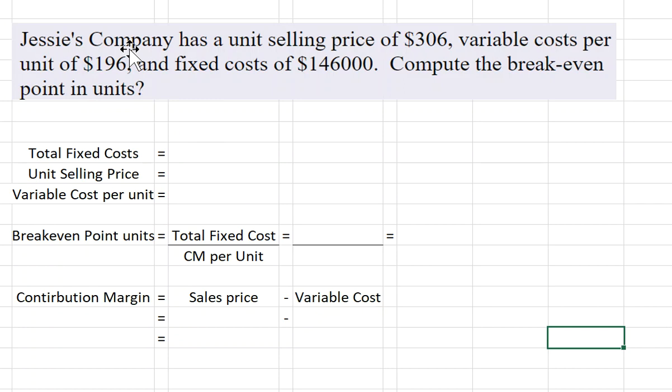Well, the problem says Jesse's company has a unit selling price of $306, variable cost per unit of $196, and fixed cost of $146,000. So we'll go ahead, I'm just going to plug in this information so we can see it all.